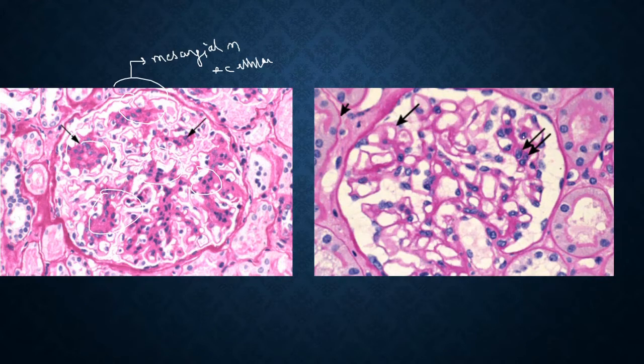As we see here, the mesangial cells are one to two, the capillary walls are normal. These arrows are indicating the capillary wall thickness that is being covered with the tubular basement membrane, which is almost equal.